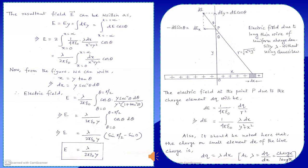After this substitution we change the limits from x = 0 to infinity, to θ = 0 to π/2, according to the basic formula of definite integration. We put the value of dx as y sec²θ dθ, and in place of x² + y² we put y² + y² tan²θ.